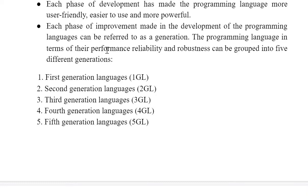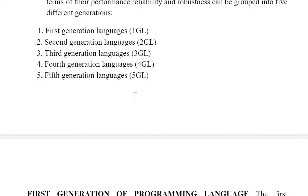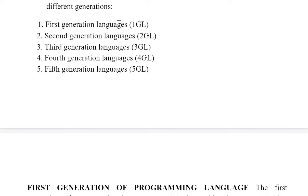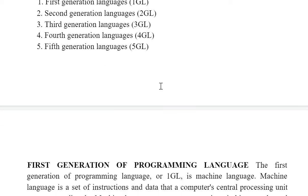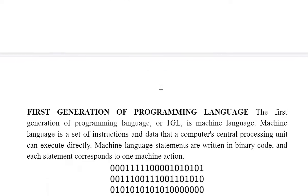The programming languages, in terms of their performance, reliability, and robustness, can be grouped into five different generations. There are five generations of programming languages: 1GL, 2GL, 3GL, 4GL, and 5GL. We'll be discussing them one by one.